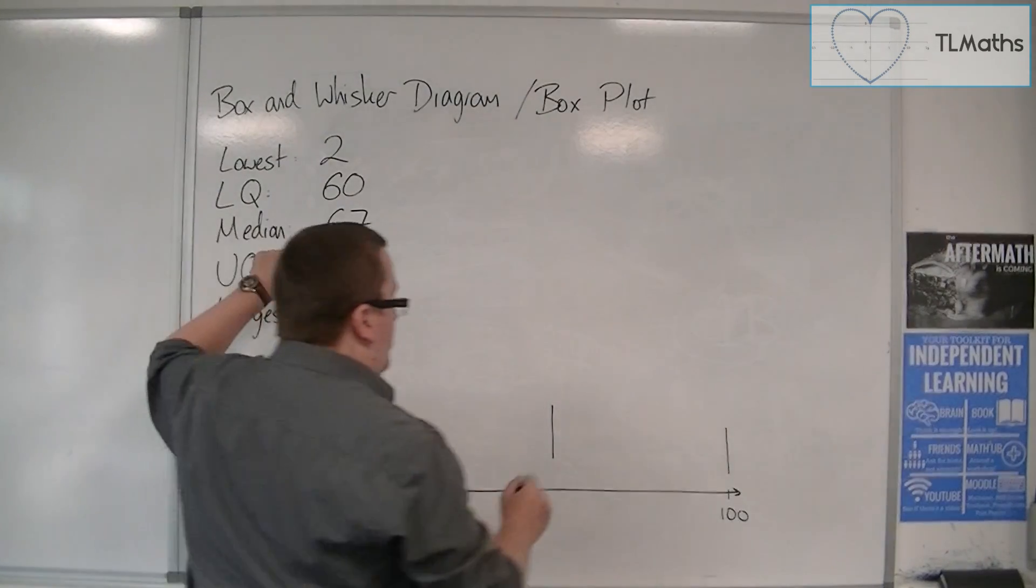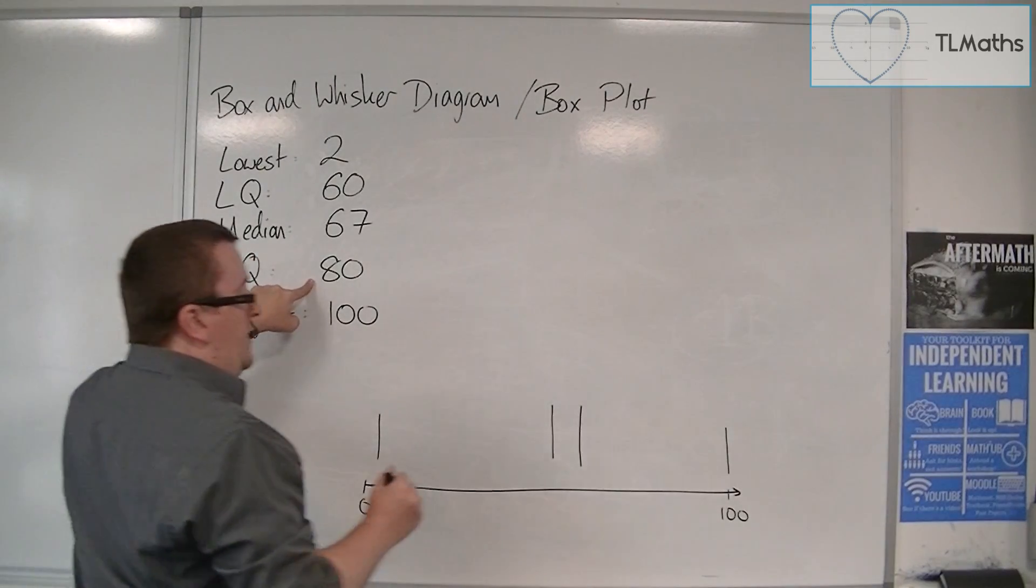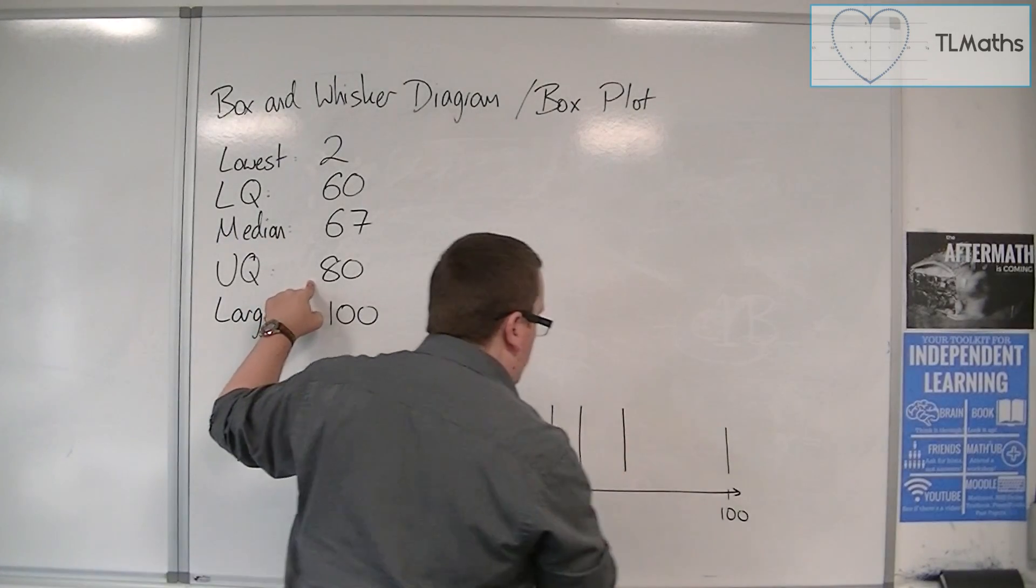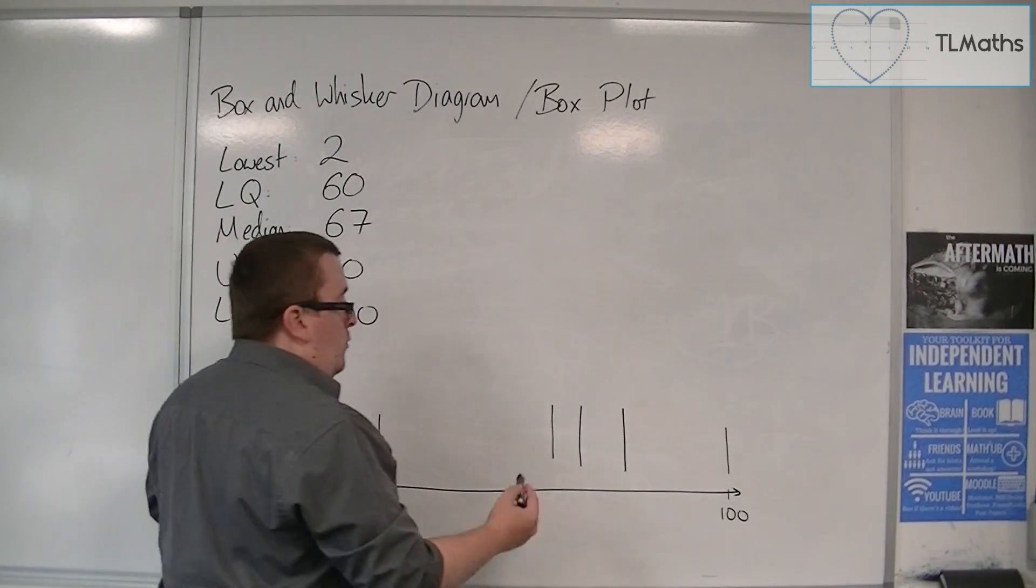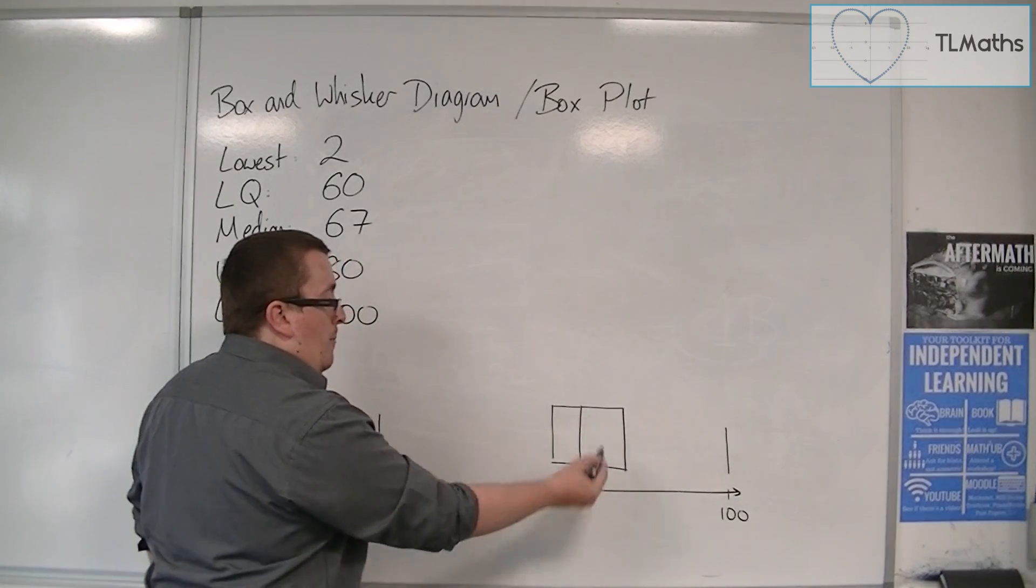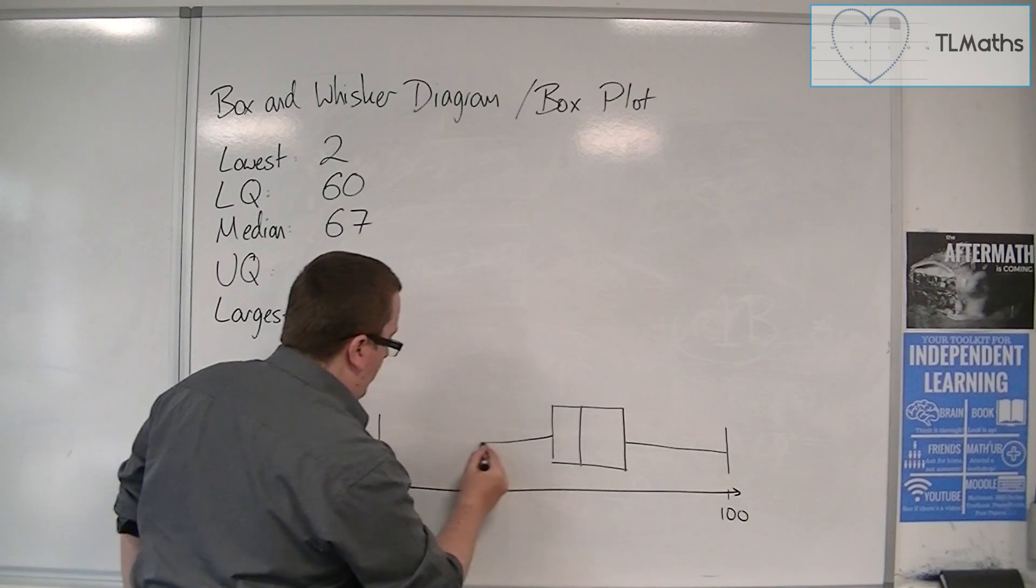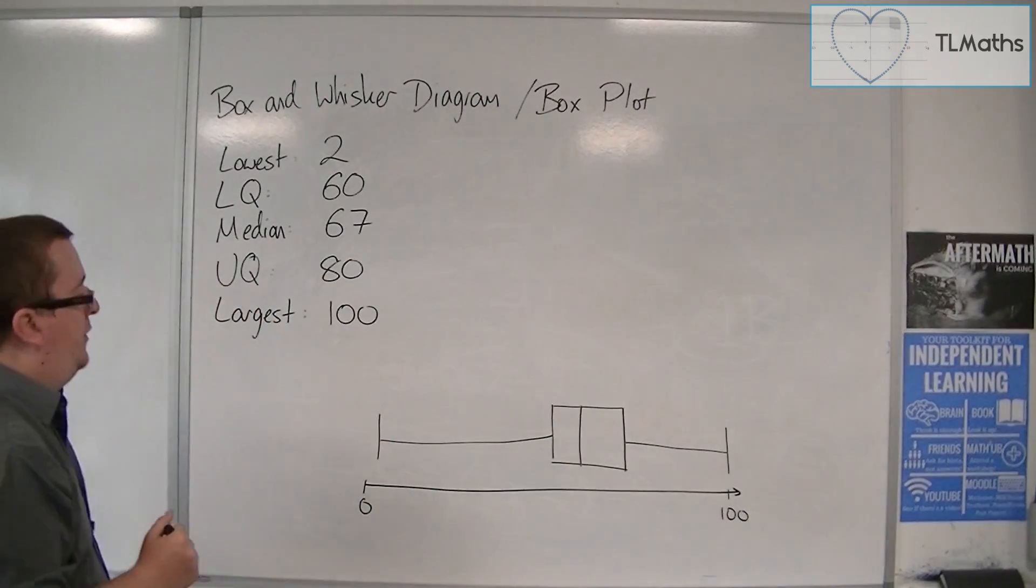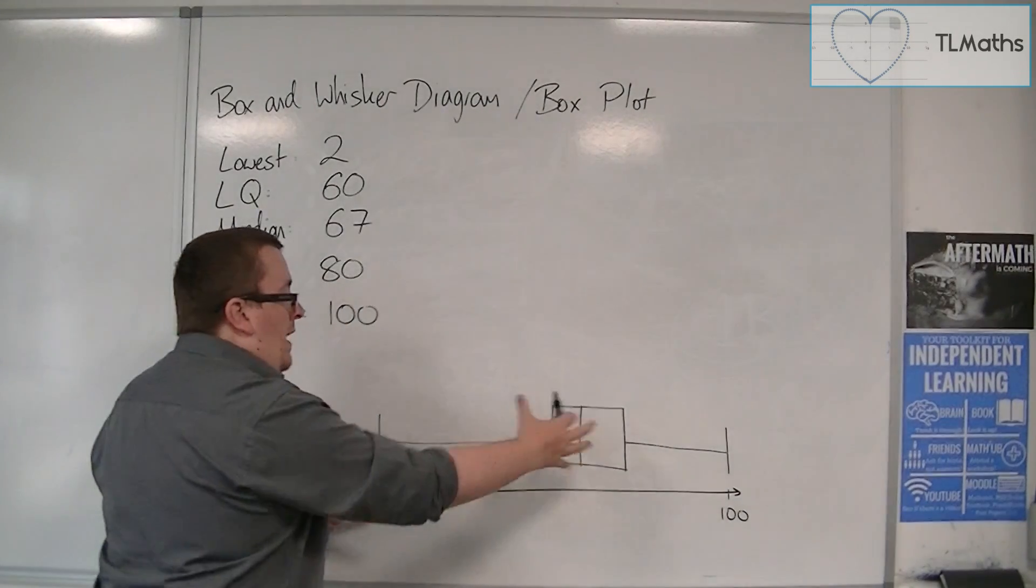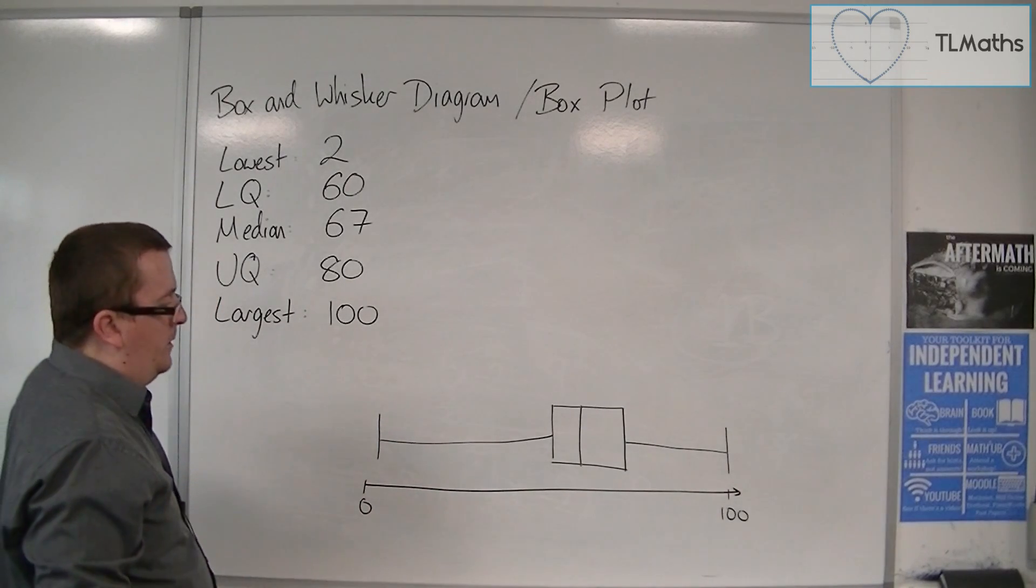Median, that's at 67, so vertical line. And the upper quartile is 80, a little bit further along. And now what we can do is we can join this up into a box, and these are the whiskers. And so what we have is a way of visualizing how this data is spread out.